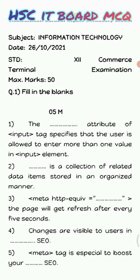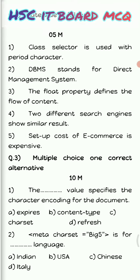Changes are visible to the users in dash SEO. Whatever changes you make in your website that should be visible to the user — that comes under 'on page SEO'. Next, meta tag is specially used to boost your dash SEO. Whatever you write inside the meta tag is never displayed on the output screen of your web page. Meta tag is always used to boost the 'on page SEO' performance of your particular website.